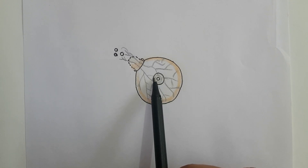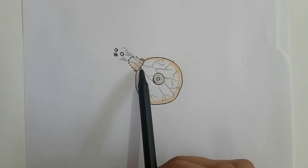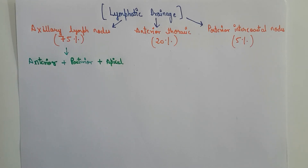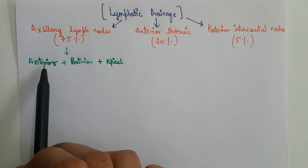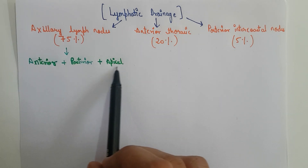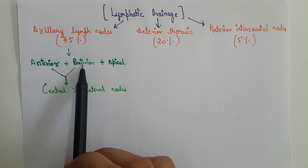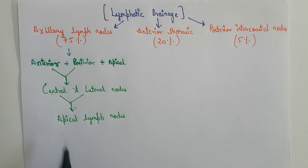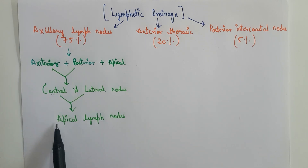As you can see, this right here is the foramen of Langer and this is the axillary tail of Spence. Because of the presence of the subareolar plexus of Sappey, the maximum amount of lymph is received by the anterior group of lymph nodes. Some amount is also drained directly into the posterior and the apical lymph nodes. The anterior and posterior groups then drain their lymph into the central and lateral groups, and the lymph from the central and lateral groups drains into the apical lymph nodes indirectly. This represents the direct drainage and this is the indirect drainage to the apical lymph nodes.